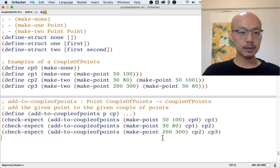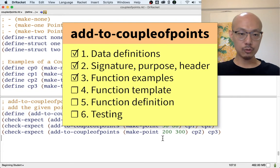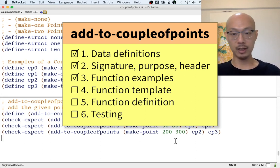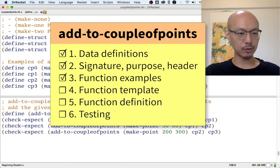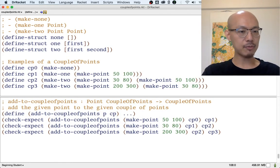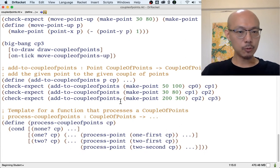All right. So we're done with step three of the design recipe. We have some examples. We have an example for every possible kind of input. What template should we use? We should use the same template as we have before. Here's that template again. We're going to rename processCouplePoints to add to a couple of points.